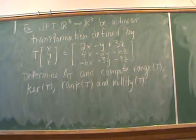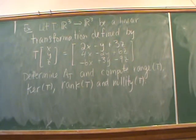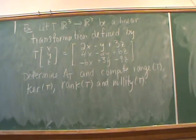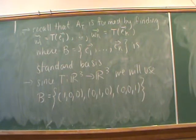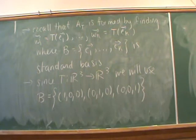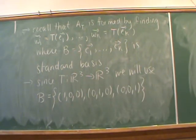Let's tie those last two theorems together with an example. We're going to take T from R3 to R3 as a linear transformation defined in the following way. What we want to do is determine what the standard matrix looks like, and then use the standard matrix to compute the range, the kernel, the rank, and the nullity of our linear transformation T. It really boils down to row reducing that matrix and then using the row echelon form or reduced row echelon form to talk about the column space and null space of A sub T.